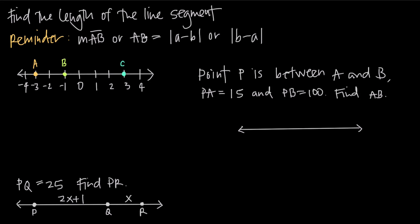So either way, we can write the notation either way, but the length of a line segment is going to be equal to the absolute value of A minus B, or the absolute value of B minus A. We're going to show that it doesn't matter which one we do. But for example, if we have this number line and we're asked to find the length of the line segment AB, so from A to B, here's what that looks like.